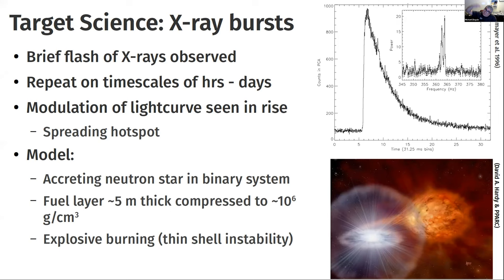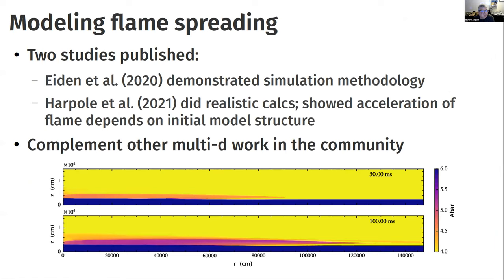Moving Castro from CPU to GPU gave more than a factor of 10 in performance — probably closer to a factor of 20 — on a single node of Summit. That allowed relaxing many approximations and doing more realistic simulations. The goal is to model a propagating burning front spreading across the surface of a neutron star to understand the nucleosynthesis, reaction rates, and observable signatures.